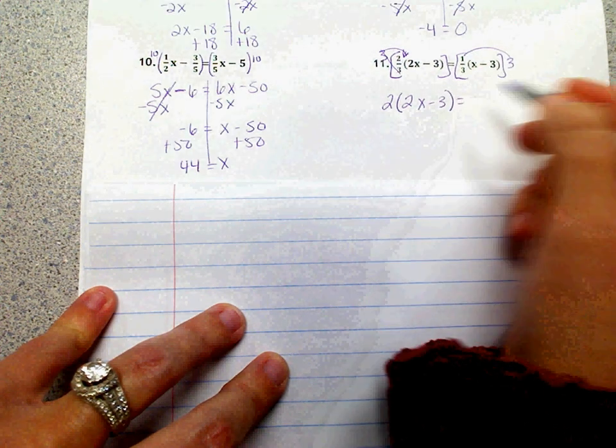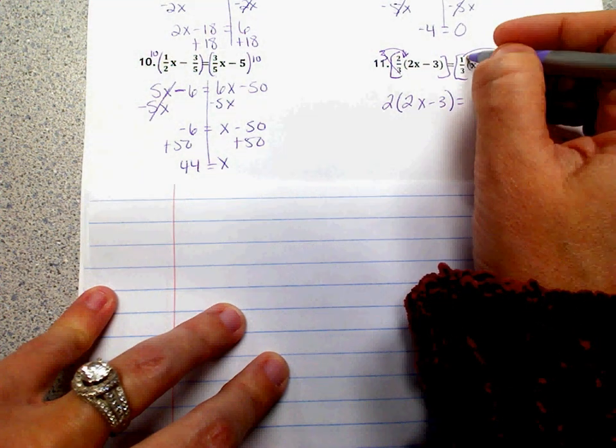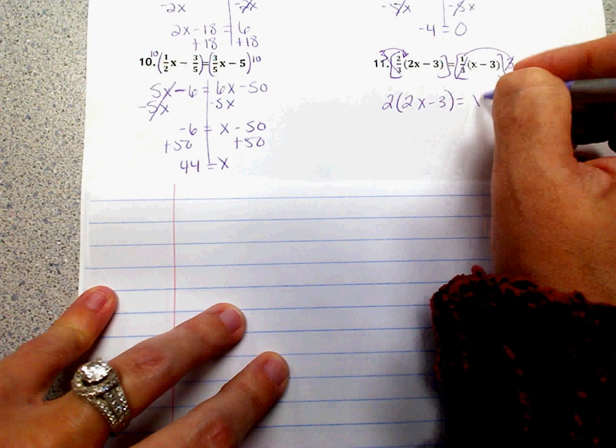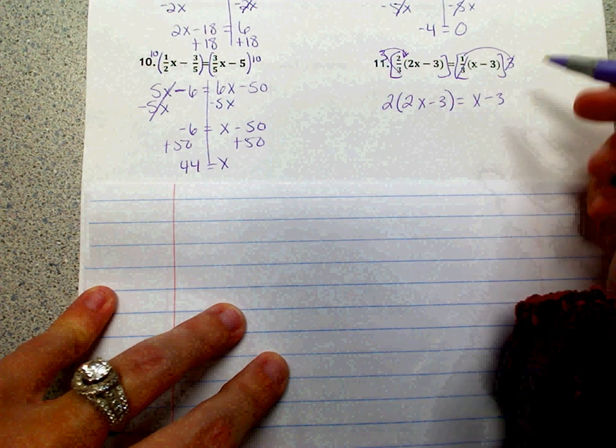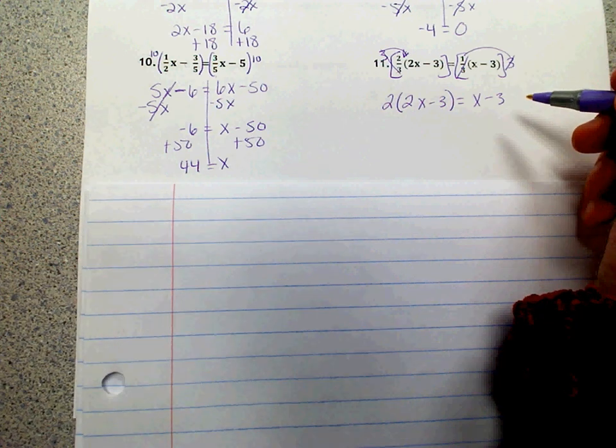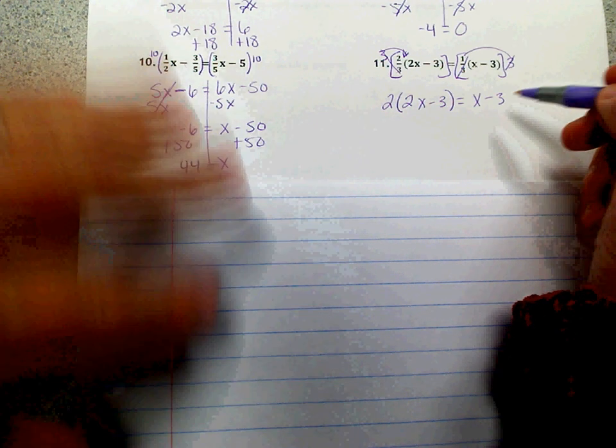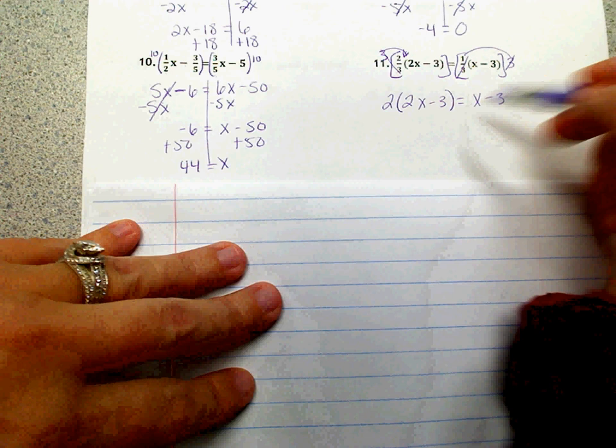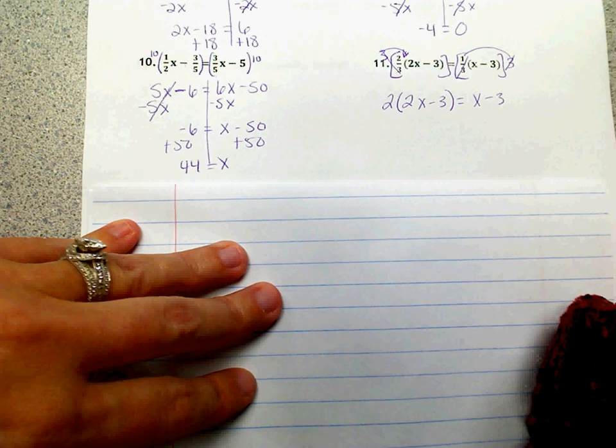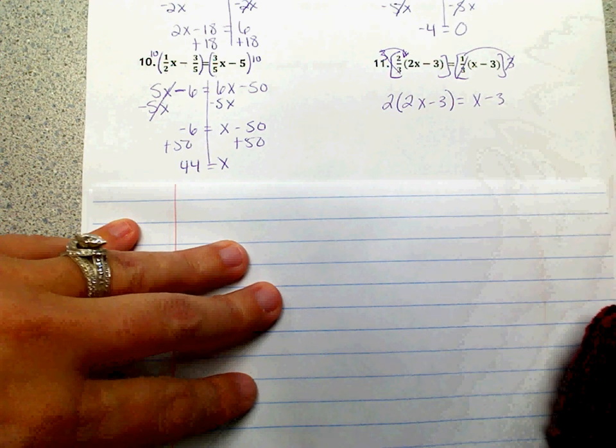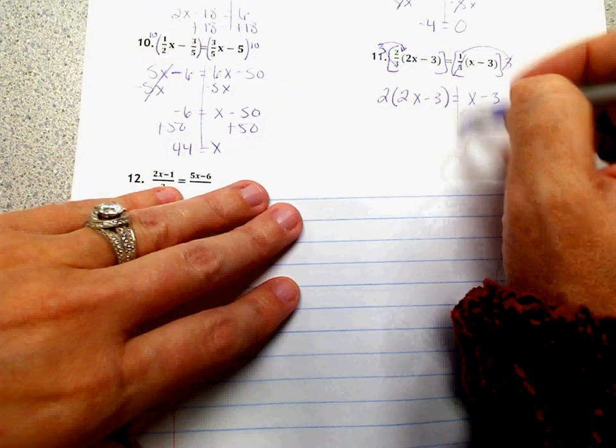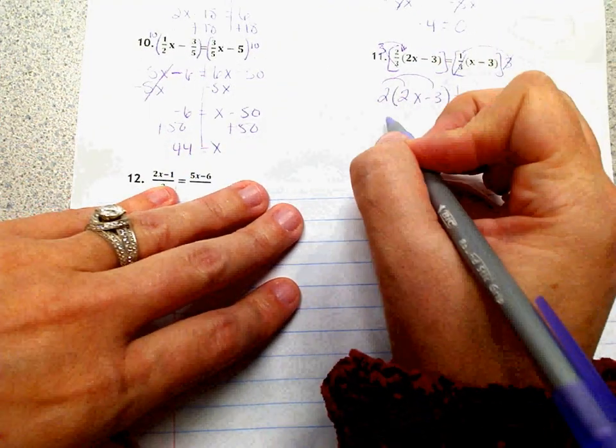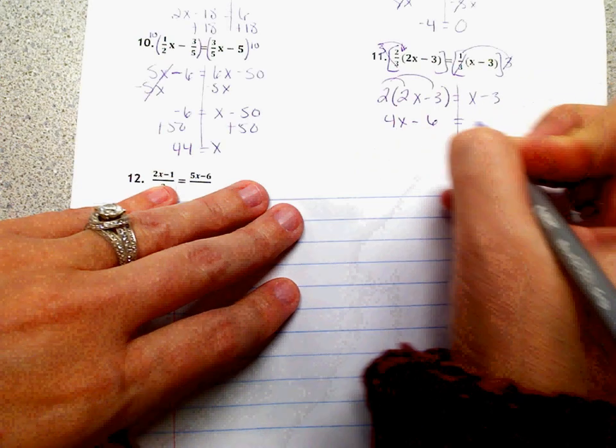Over here, those 3s cancel out, and so you're just left with x minus 3. Now some of you might put it in parentheses and put a 1 in front. 1 times anything is that number, so I don't really need to put the 1. You can if you prefer, but this is what it would look like. It will save us an extra step. So now I'm just going to distribute over here on the left. So that gives me 4x minus 6, and then again over here I have x minus 3.